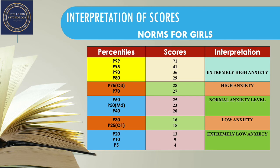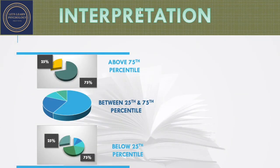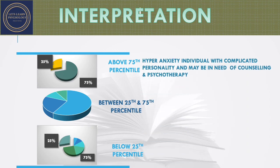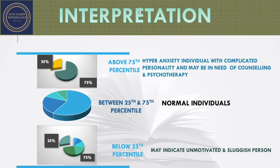One thing to take into account is that these interpretations are just reference points, as this test was developed on college students. If you are going to use this test on a large scale, it is better to develop your own norms based on your own population. As suggested by the authors, if someone scores above the 75th percentile, that would be a hyper-anxious individual with a complicated personality who may need counseling and psychotherapy. Scores between the 25th and 75th percentile indicate normal individuals, and below the 25th percentile indicates an unmotivated and sluggish person.